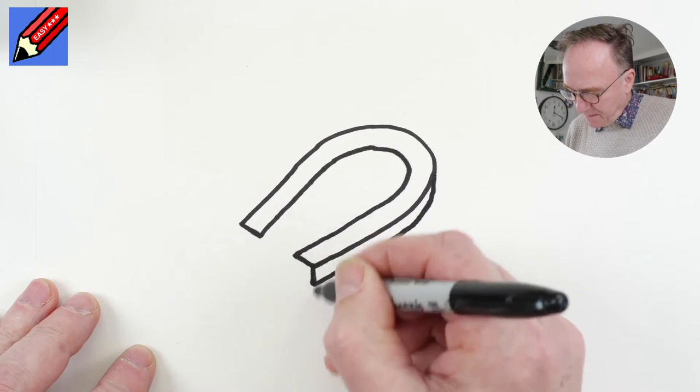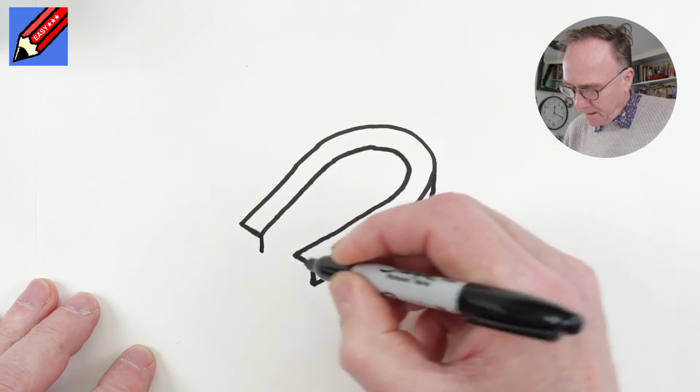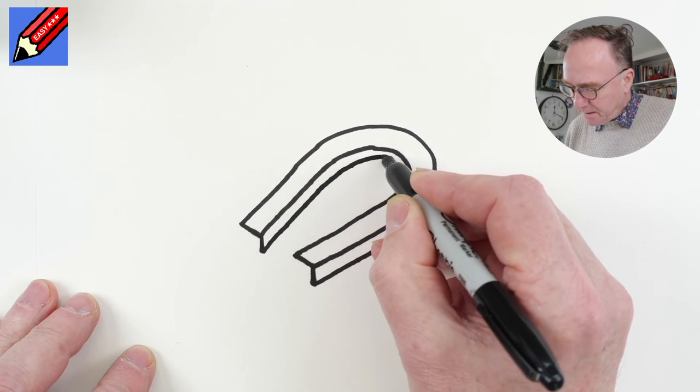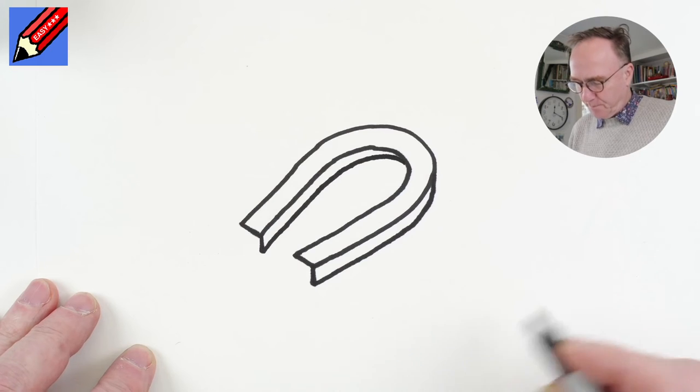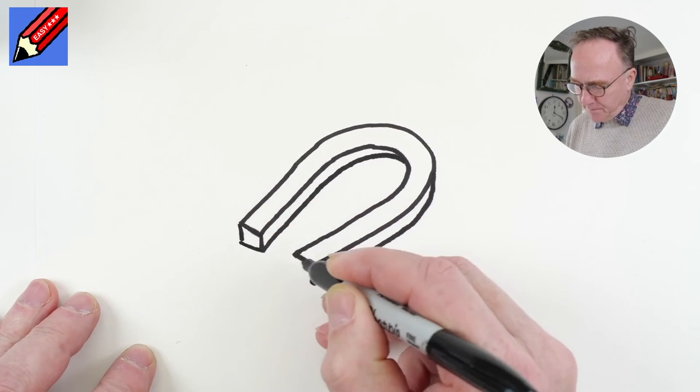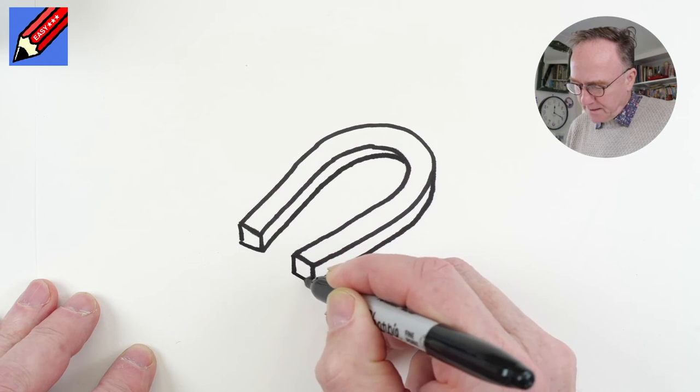We'll do the same here same length down and then we're going to go back back back like that and then it's just going to go curving, curving, curving in like that and then we need to just finish off these front sections.